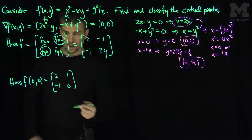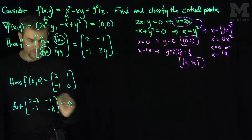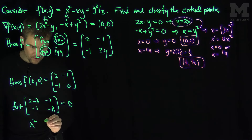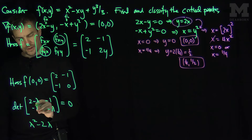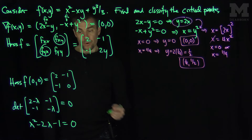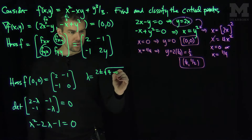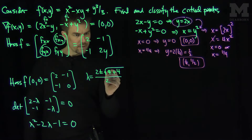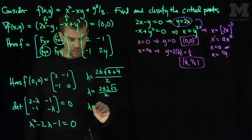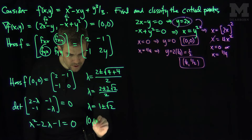To classify the critical point, we find the eigenvalues by computing det([2-λ, -1; -1, -λ]) = 0. The characteristic equation is λ² - 2λ - 1 = 0. Using the quadratic formula, λ = (2 ± √8) / 2 = 1 ± √2. One eigenvalue is positive and one is negative, so (0, 0) is a saddle point.